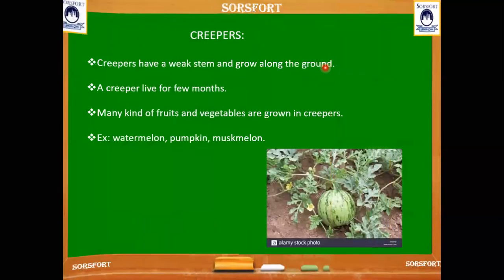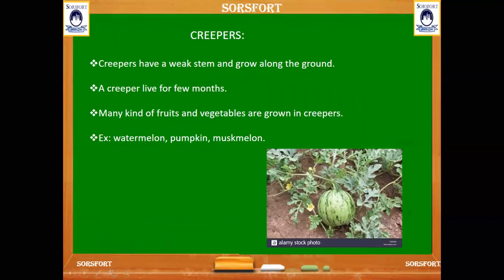Next we can see about creepers. We can see one creeper — the watermelon plant. It has a very weak stem, so it grows along the ground because of the weak stem. Creepers live for only a few months; once the fruit growing is stopped, the plant dies.